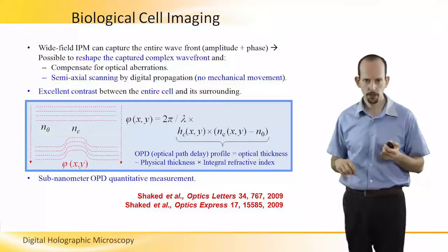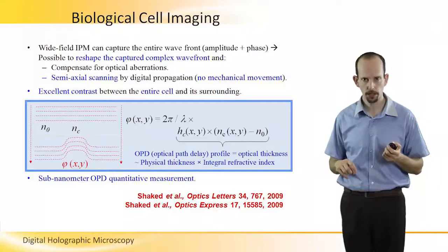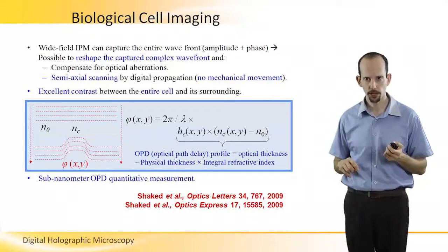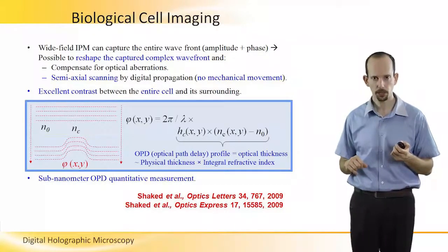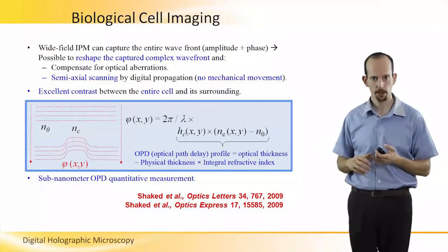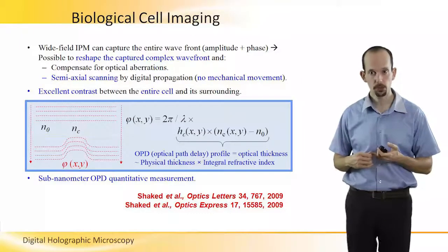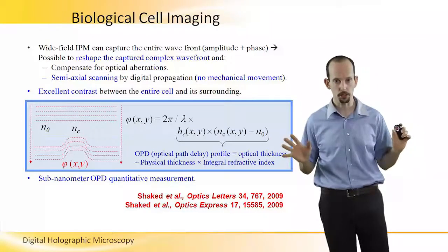And when I'm using interferometric phase microscopy, in order to capture the entire wavefront, I can reshape the wavefront, and I can compensate for optical aberration. I can do semi-axial scanning, as we have seen. And I have excellent contrast between the entire cell and its surroundings.